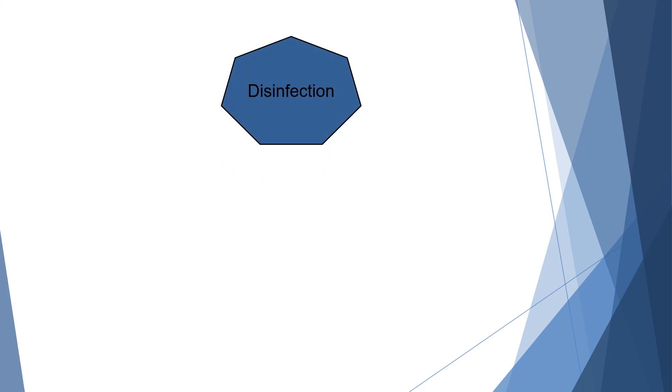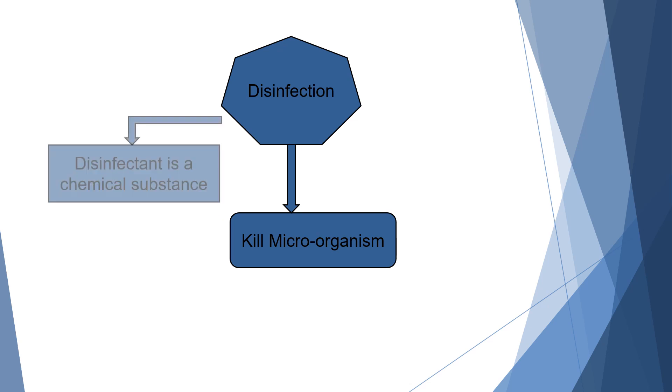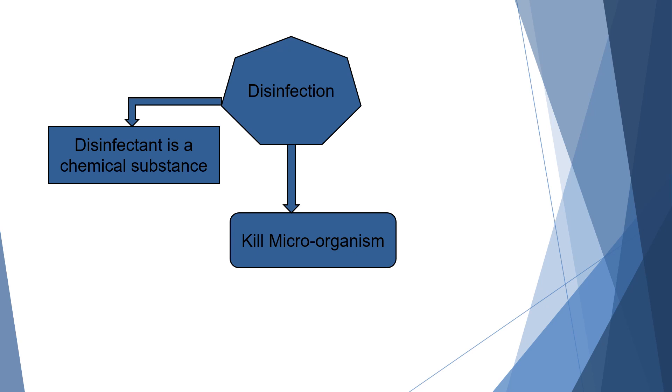Let's start with disinfection. As we all know, disinfection process is a process of killing microorganisms. In disinfection process, a chemical substance is used and this chemical substance is called a disinfectant. Disinfectant is applied on the surface of living and non-living things to kill microorganisms.